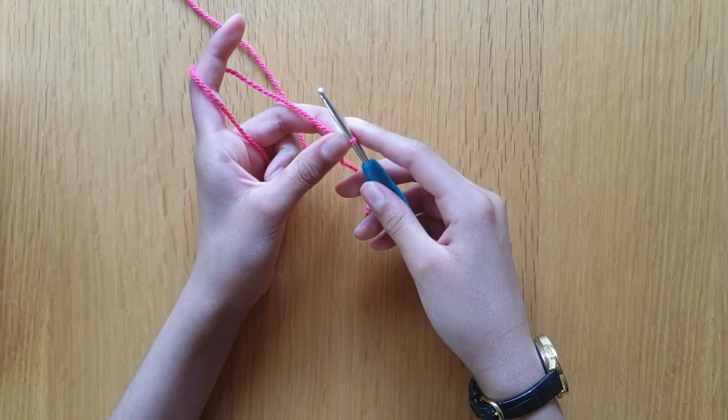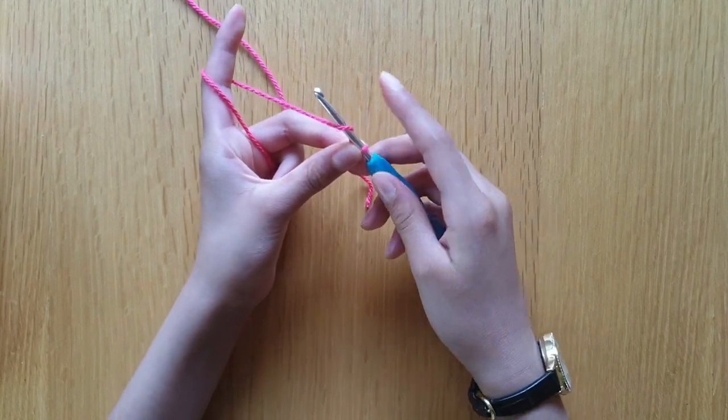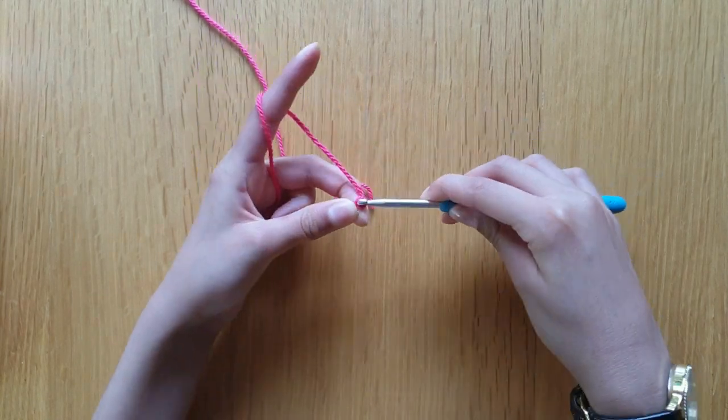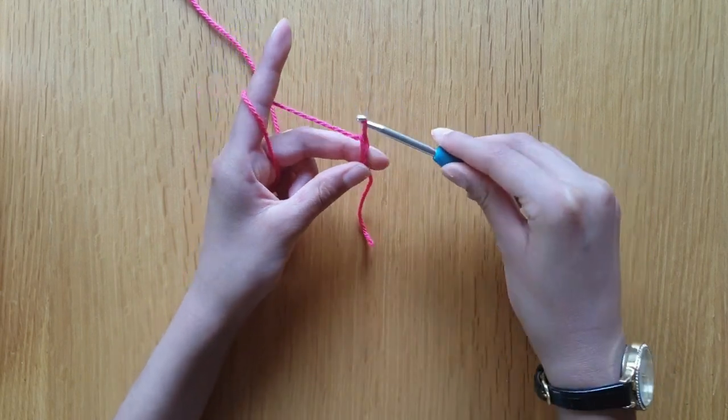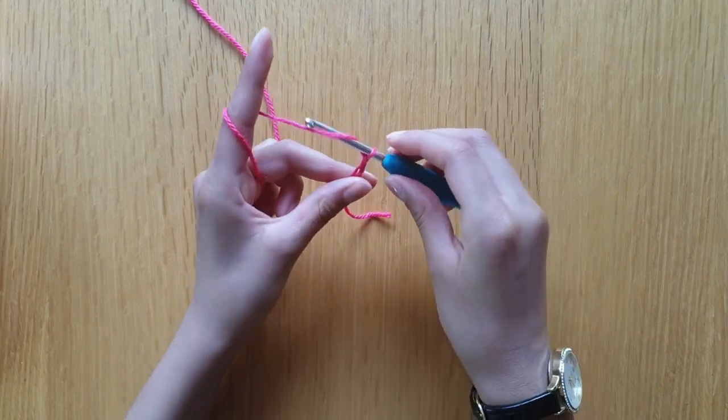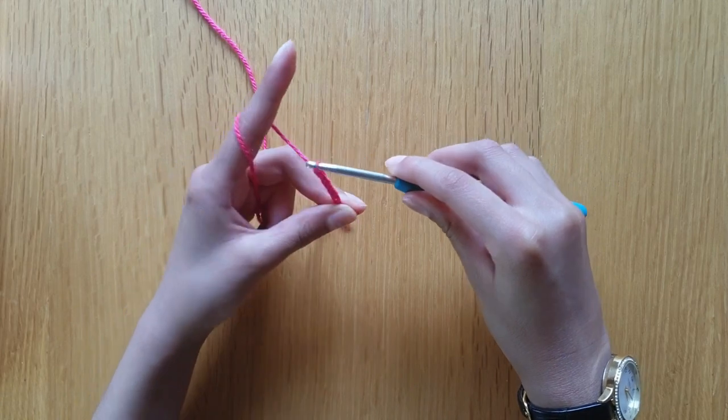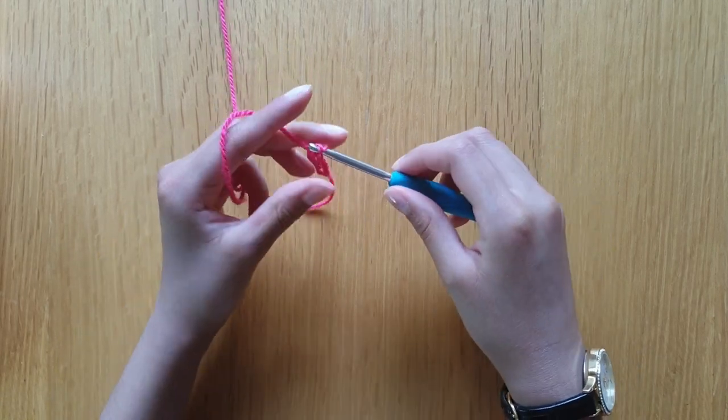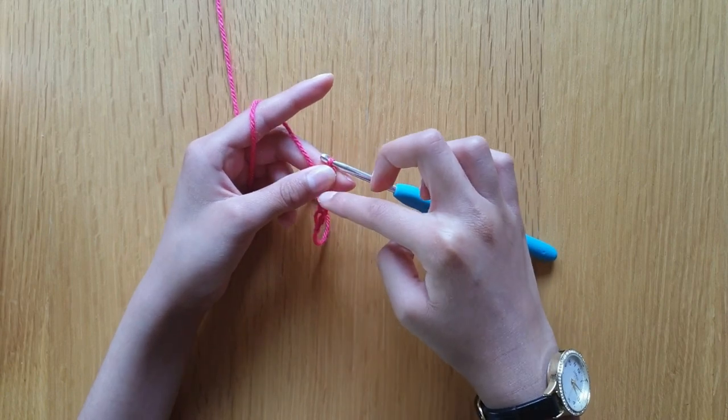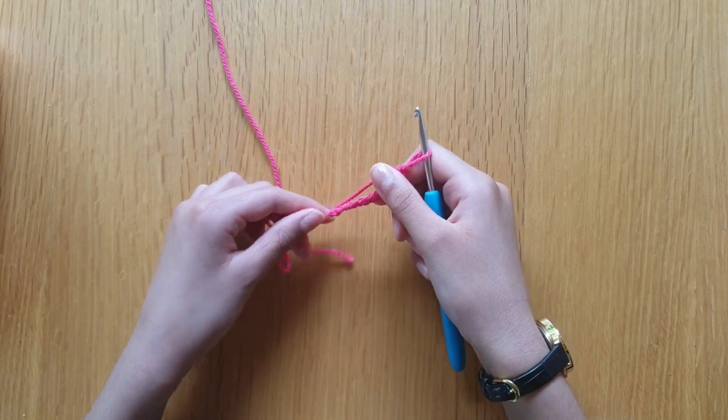Now we're going to start chaining. We're going to chain eight. Wrap the yarn right to left and go through the loop. Wrap the yarn again and go through the loop, that's two. Three, four, five, and continue this until you've reached eight stitches. Okay, so I've chained my eight stitches.